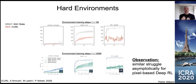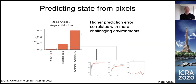If images don't allow you to extract the state — for example, contact forces may not be directly visible — that could explain why learning from pixels can't match learning from state in those specific environments. And indeed, that's what we see: larger error in state prediction from images directly correlates with not being able to learn from pixels as well as from state. Our hypothesis is that where enough information exists in the pixels, CURL can bridge the gap; where it doesn't, no method will.